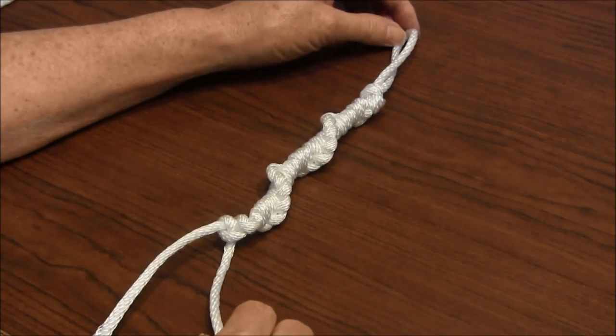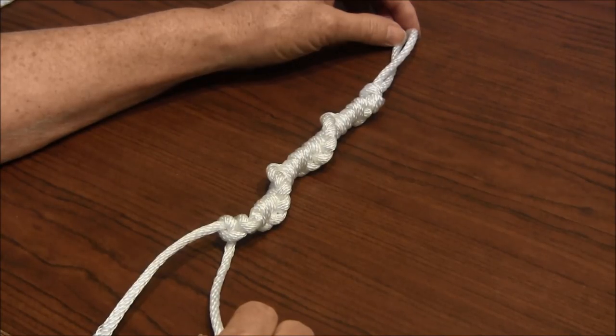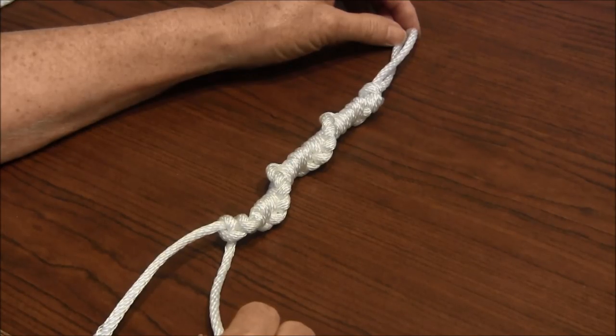Hello. This tutorial by needlepointers.com will show how to make a spiral knot using only two cords, which is also known as the half hitch spiral knot.